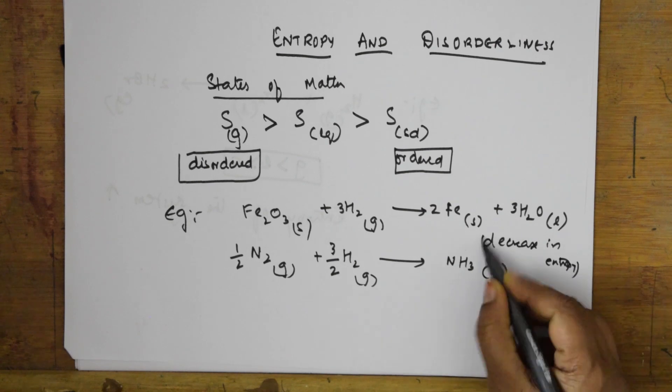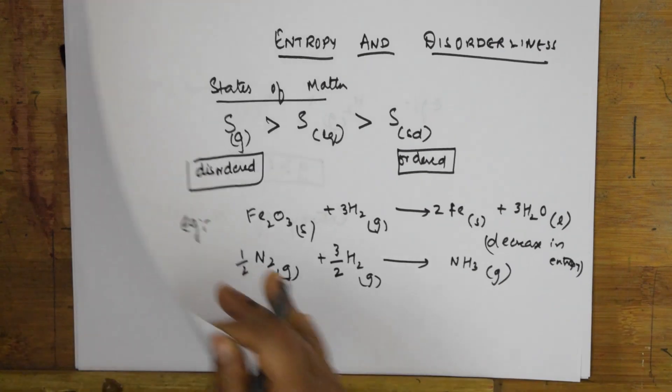Hope you have understood what entropy is and how it relates to disorderliness. Now when learning the entropy concept, you need to learn total entropy change in different types of expansions. I'll be doing the derivation for entropy in my next video — specifically the derivation of entropy change in isothermal conditions, covering both isothermal reversible and irreversible processes. Please stay connected.